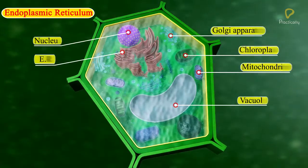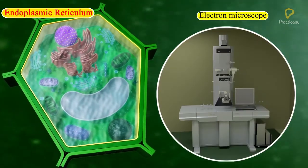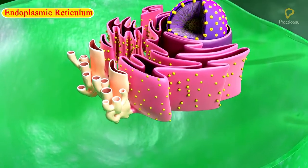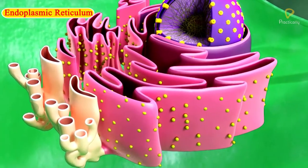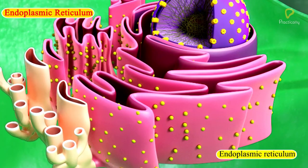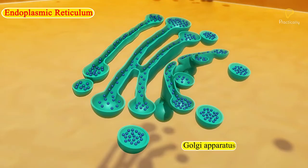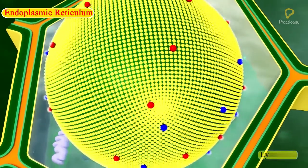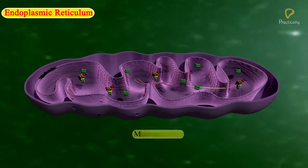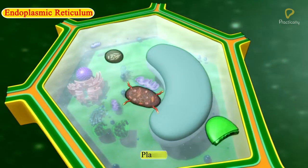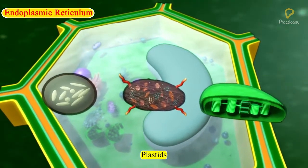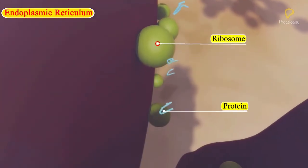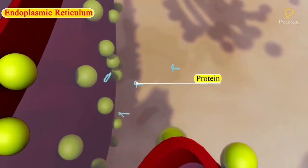Some of these organelles are visible only with an electron microscope. Some important examples of cell organelles are endoplasmic reticulum, Golgi apparatus, lysosomes, mitochondria, and plastids. They are important because they carry out some very crucial functions in cells.